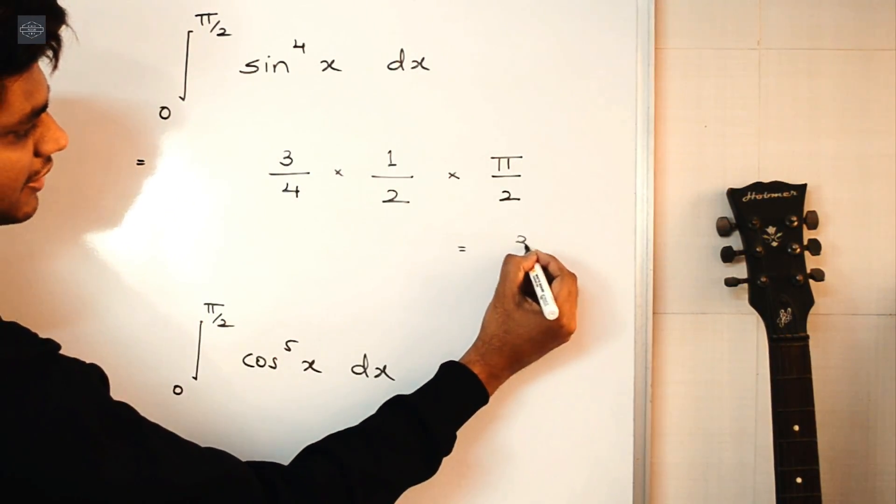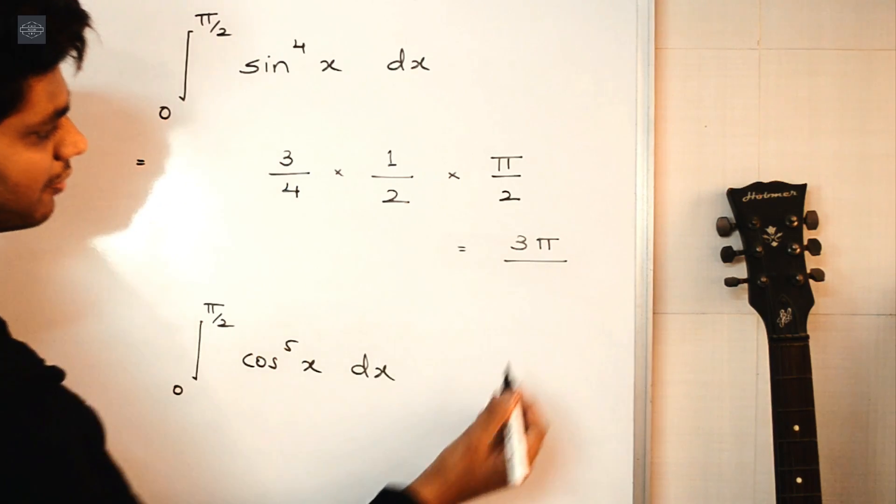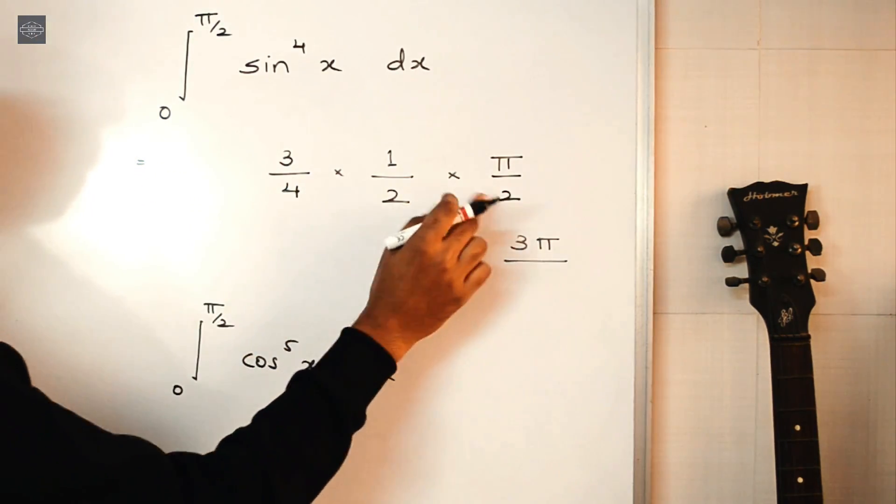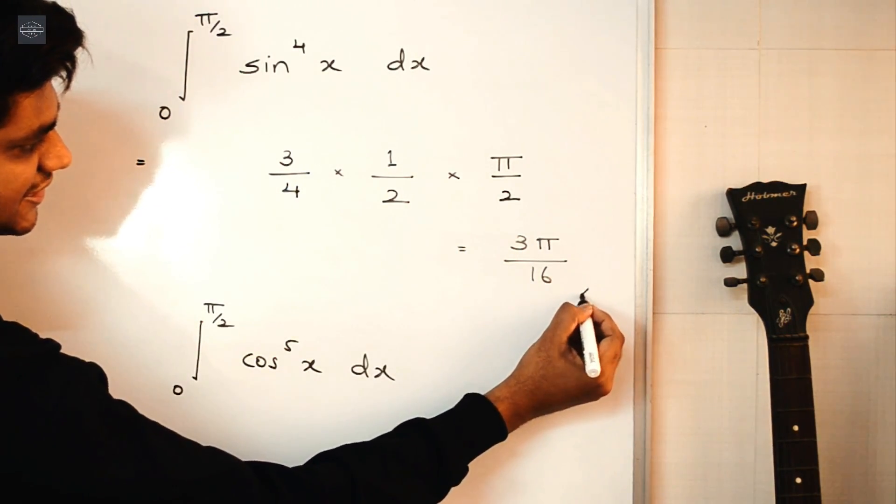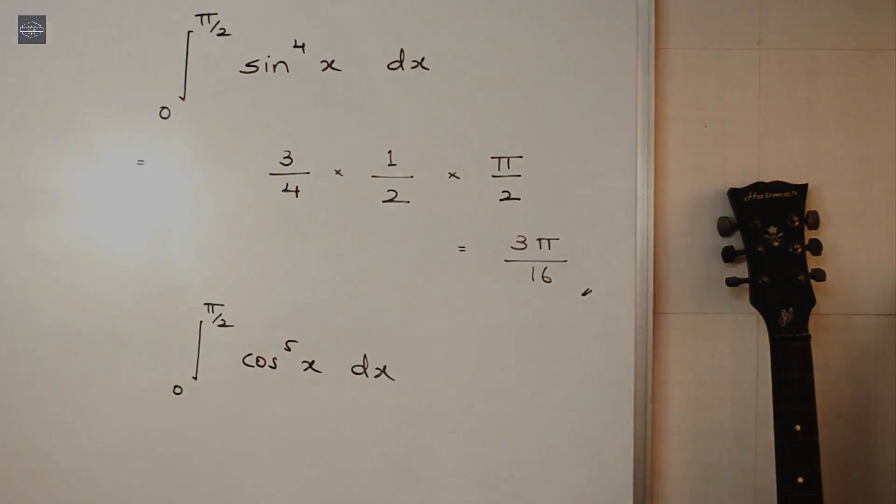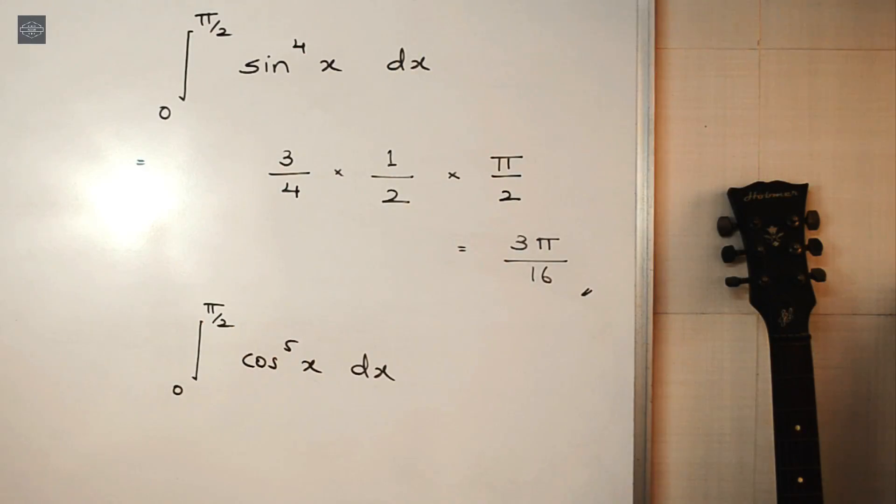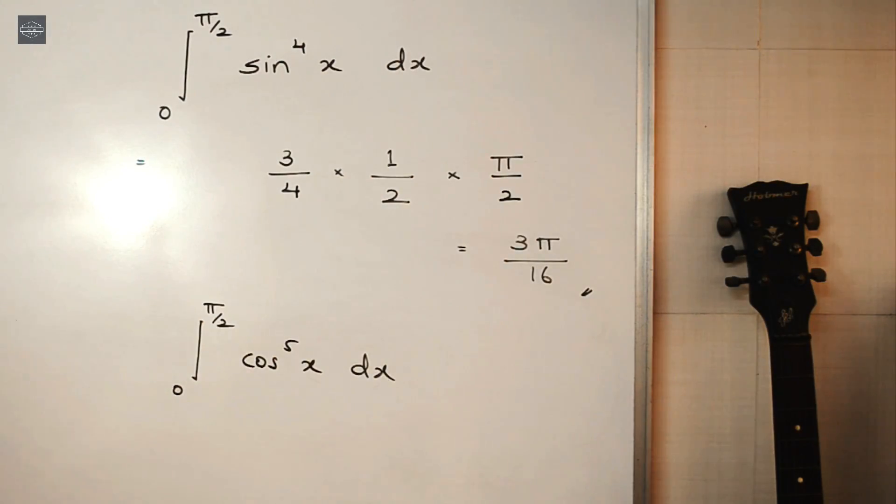So this will be 3 into π, this is 3π in the numerator, upon 4 into 8, 8 into 16. And that's it. 3π by 16 is the answer. See guys, what a beautiful trick. You get the answer to this question in just a few seconds, without solving any particular integration.